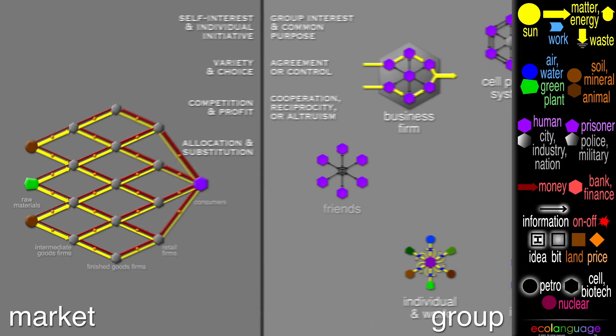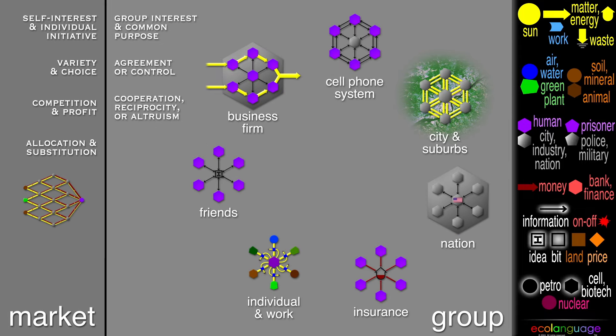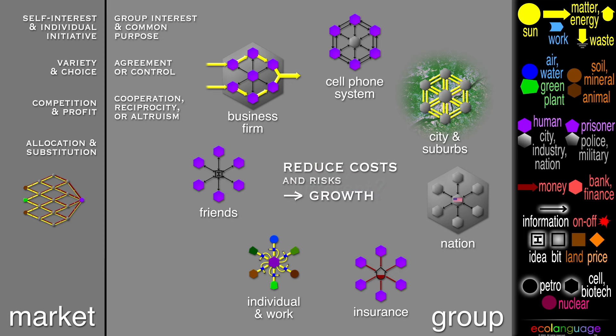On the group side, there are many things. For example, a group of friends, a business firm, a cell phone system, a city with suburbs, a nation, an insurance pool, and an individual person surrounded by work inputs. We may think of these as very different, but they all work to reduce costs and risks, which might lead to growth.